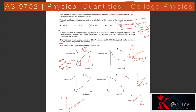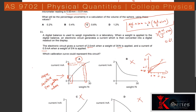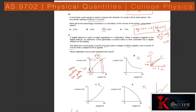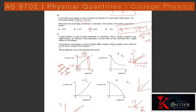Question 10: A micrometer reads 5.00 mm ± 0.01 mm for the diameter of a steel sphere. Volume of sphere = (4/3)πr³ = πd³/6, so the power on d is 3. Percentage uncertainty = 3 × (0.01/5.00) × 100 = 0.6%.